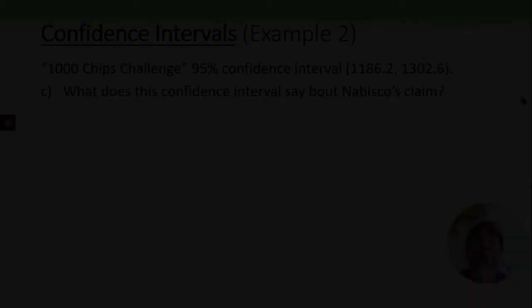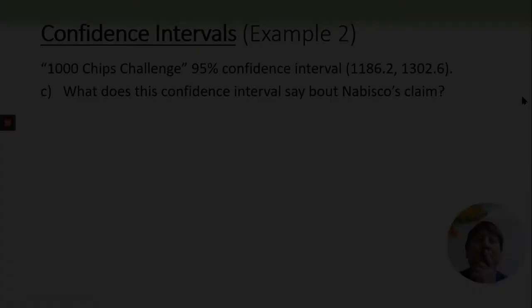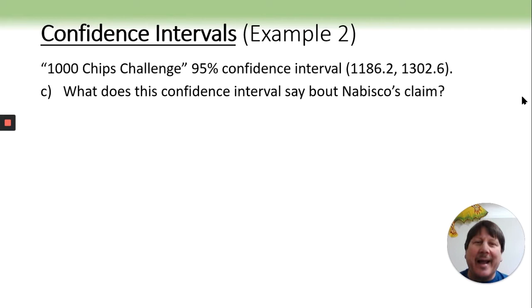What does this confidence interval say about their claim? Well, they claimed 1,000, and 1,000 is not in our range. In fact, our range is quite a bit above 1,000, so I think it is safe to say that they have over 1,000 chips. And if you did a test of hypothesis to test whether they had over 1,000 chips, I would have to say with a 2.5% alpha level, it would come out to be significant because we're well above that.